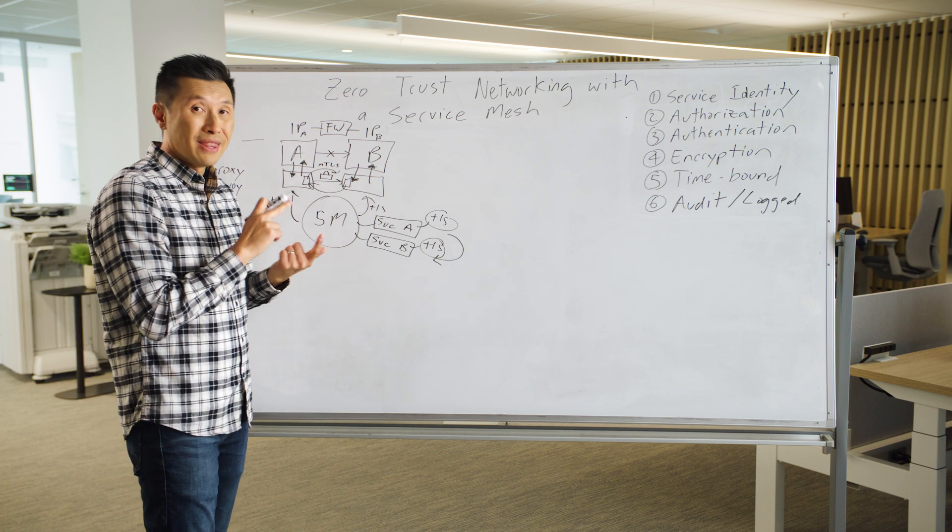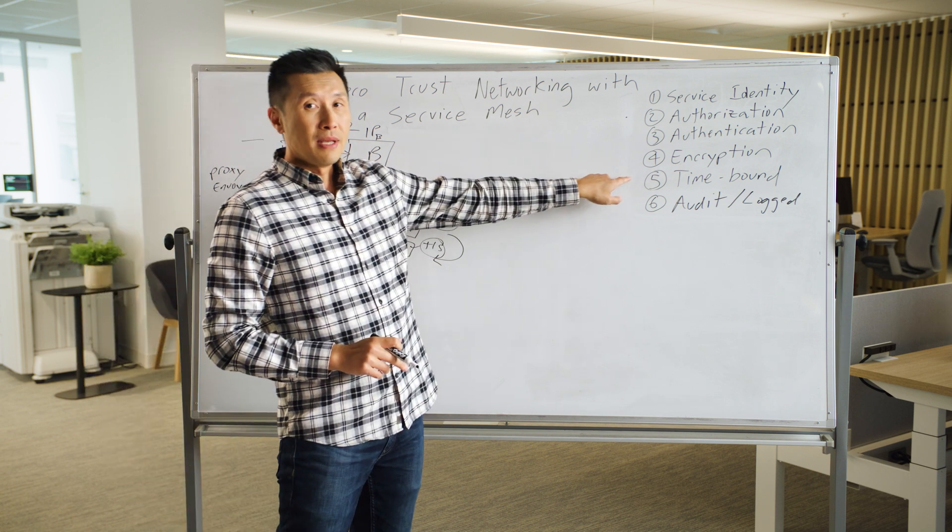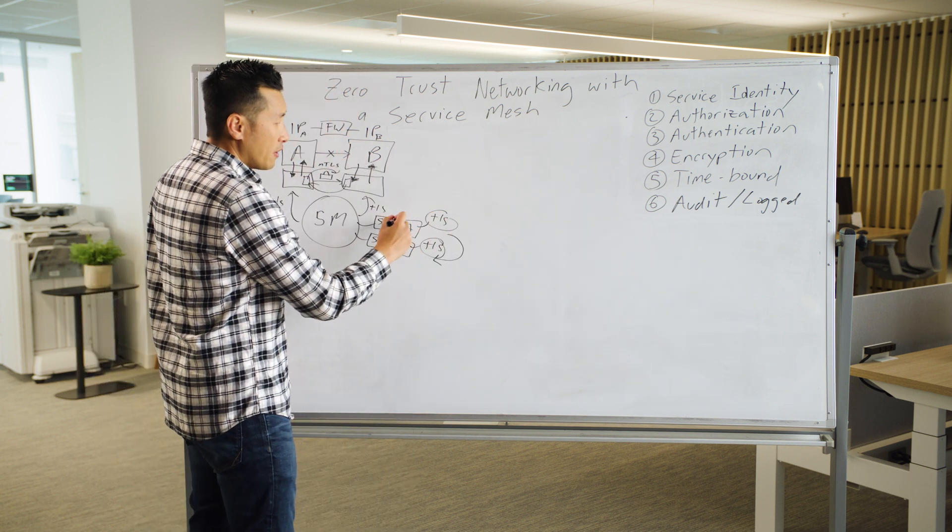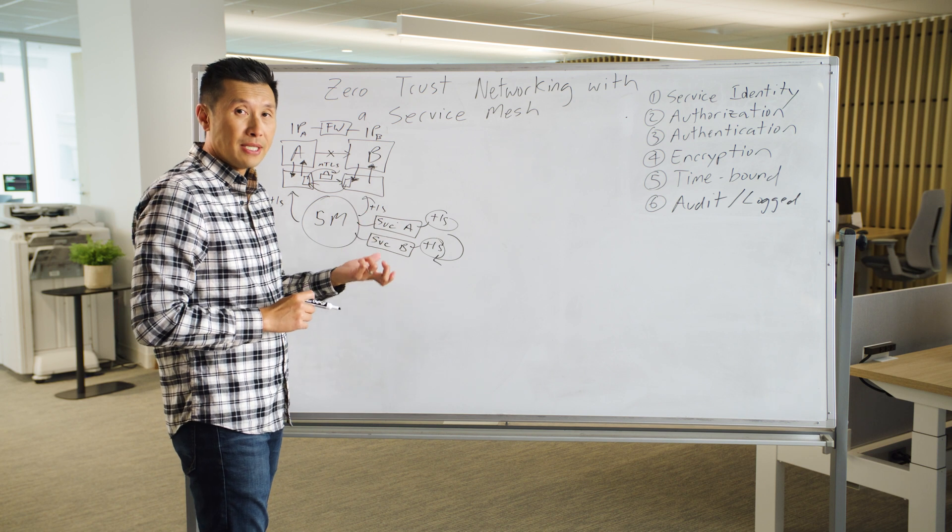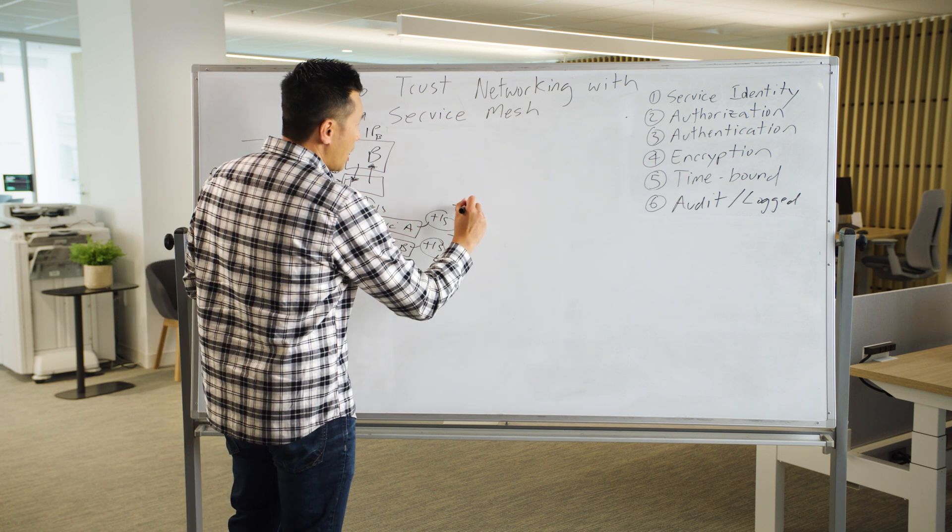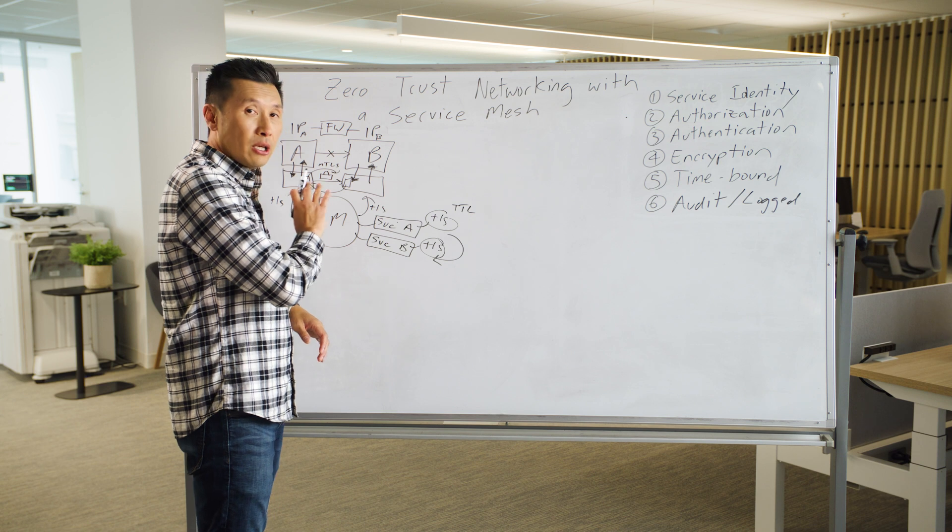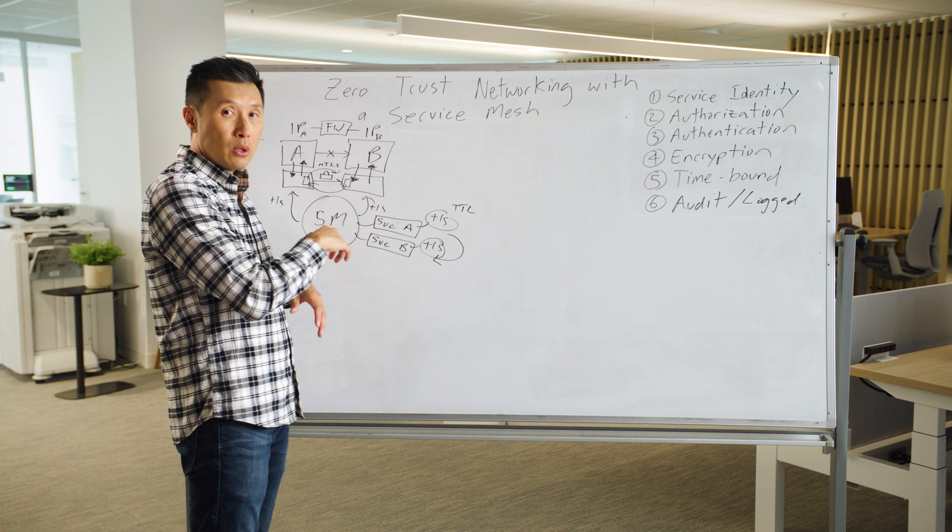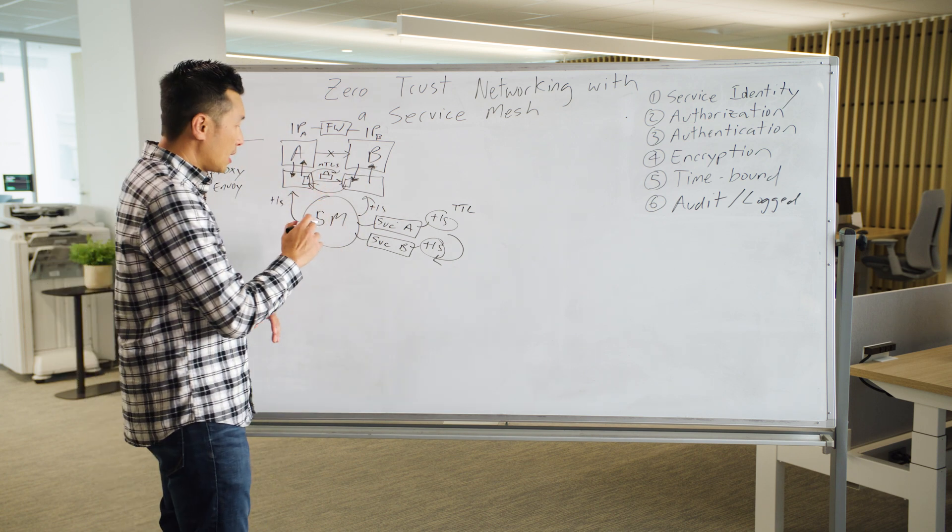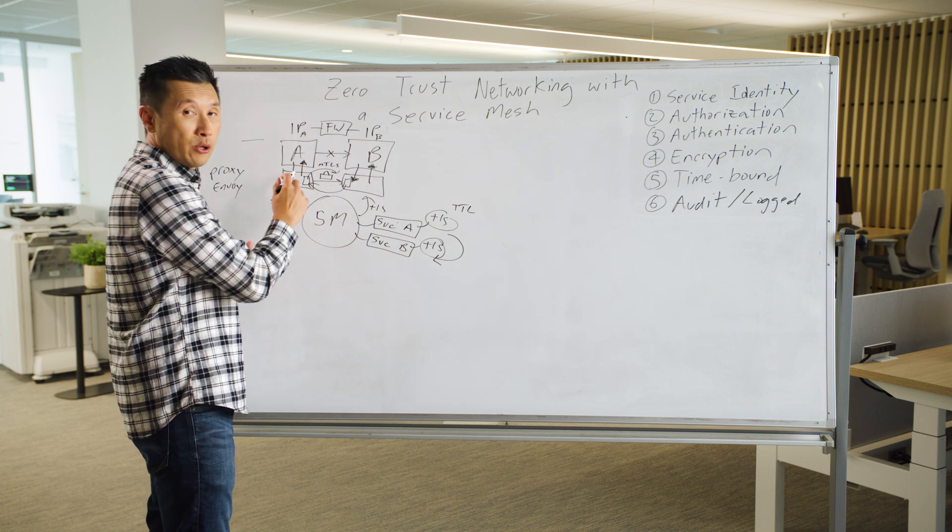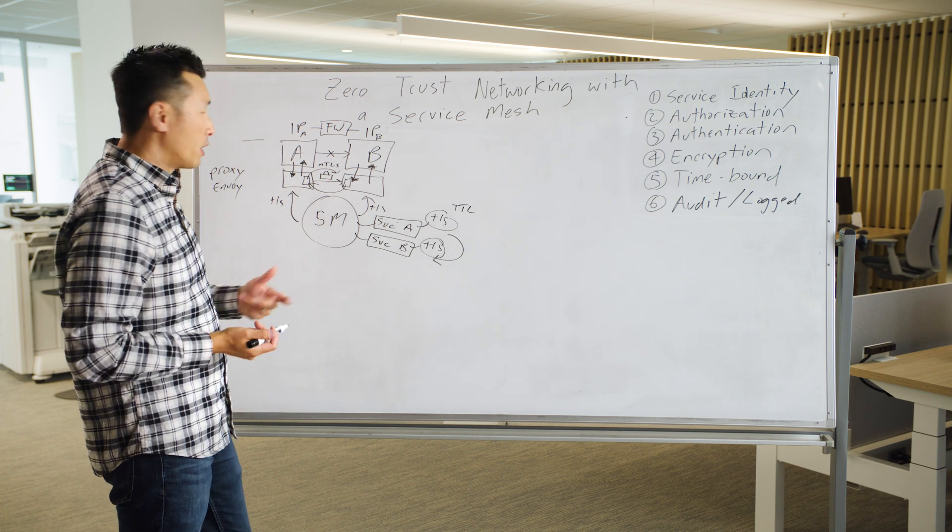Now you're secure from an authorization point of view, authentication point of view, and encryption point of view using these service identities. The next part is time-bound access. Going back to these service identities that are tied to TLS certificates, these TLS certificates have a certain time to live, a TTL. They will expire within a certain amount of time. You don't want these TLS certificates to be around forever. You want them to expire and have to be renewed and rotated. The service mesh manages all that for you. Once it's expired, the service mesh will generate new ones and redistribute them out. Now you're rotating them on a more frequent basis, which is always a better security practice.